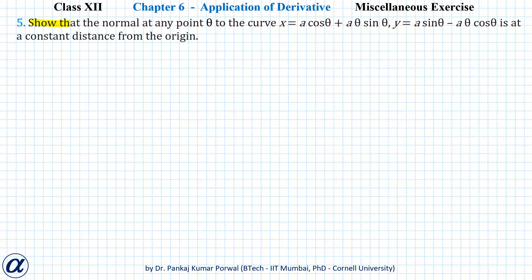In this question we have to show that the normal at any point theta to the curve given in parametric form as x equals a cosθ + aθ sinθ and y equals a sinθ minus aθ cosθ is at a constant distance from the origin.